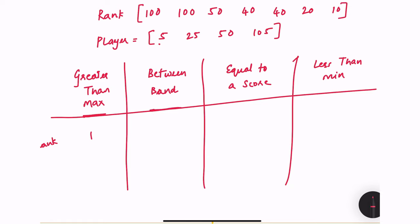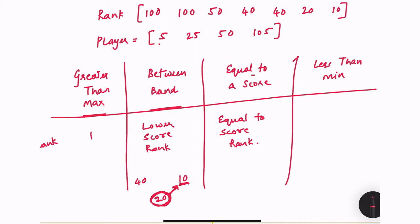If the score is between a certain band, the rank has to equal the lower one. For example, if my score is 20 and I have two scores already available — 40 and 10 — this 20 will take the rank of the player who scored 10, and the rank of 10 will be incremented to the next spot. Hence, this new player will get the rank of the score lower than that. The next scenario is if the score is equal to a certain score — in that case the new player will share the rank.